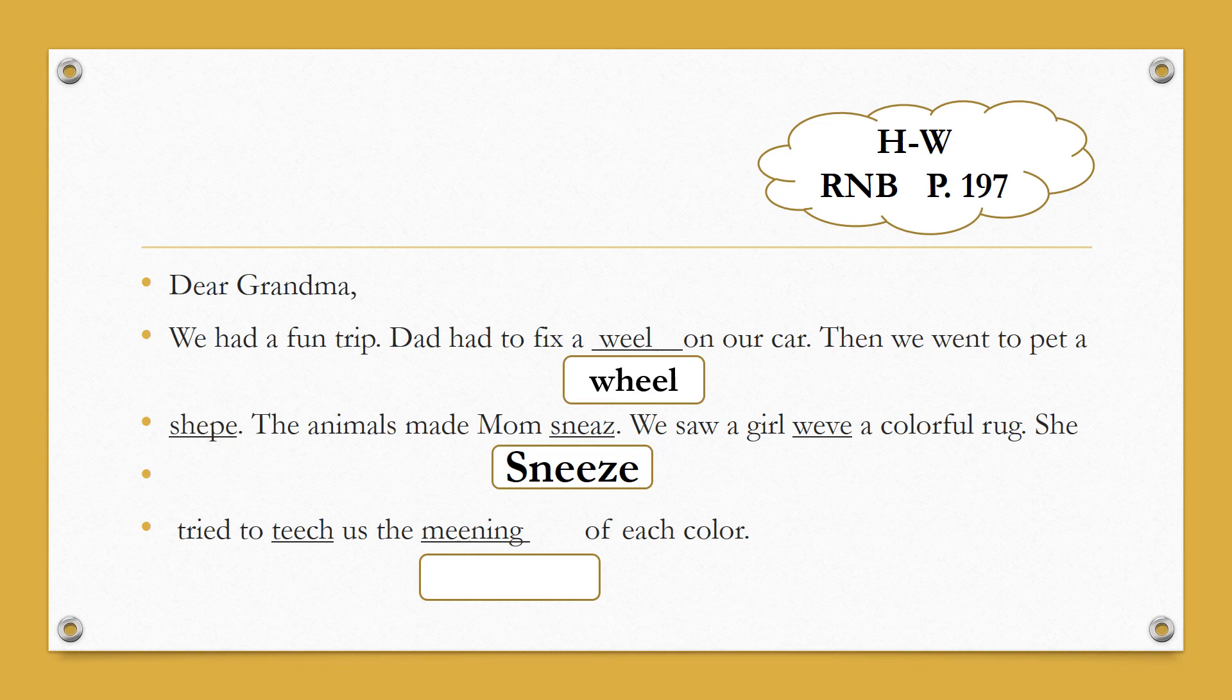We had a fun trip. Dad had to fix a wheel on our car. Then we went to pet a sheep. This sheep is an animal. We went to pet a sheep. The animals made mom sneeze. You know what sneeze means? Of course this is wrong. We're gonna circle this and this is the right word.